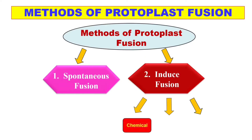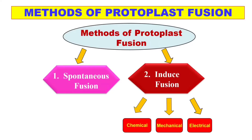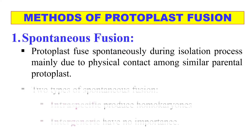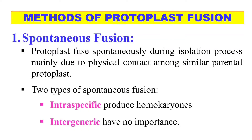In case of spontaneous fusion, protoplasts fuse with each other by themselves, but there is little chance of this and it takes a lot of time. In case of induced fusion, we induce the protoplasts to fuse with each other — that's why it is known as induced fusion. We can induce protoplast fusion either by chemical, mechanical, or electrical methods. Spontaneous fusion, where they fuse by themselves, is a time-consuming process with very less chances of fusion. There are two types of spontaneous fusion: intraspecific, meaning between the same species, which produces homokaryons, and intergeneric, which generally does not have any importance.